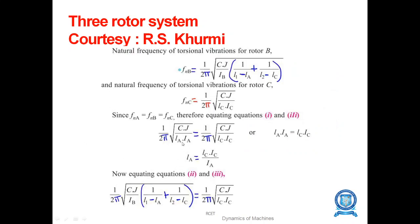For three rotor system, the formula is f_nA equal to f_nB is equal to f_nC which includes LA equal to IC into LC by IA. And substituting the values in 2 and 3 we get 1 by 2π into root of CJ by IB into 1 by L1 minus LA plus 1 minus L2 minus LC is CJ by IC into LC.